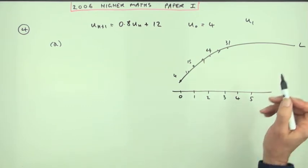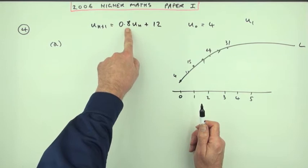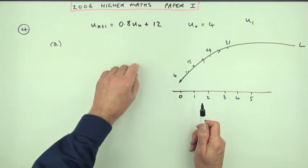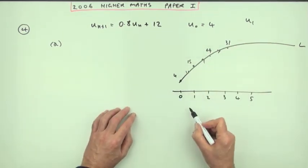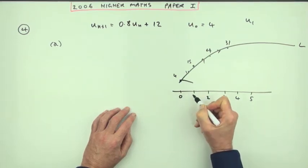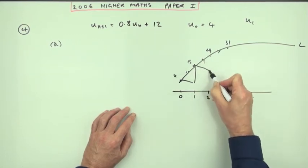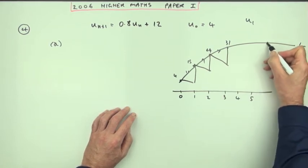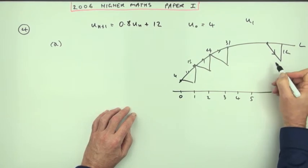It will reach a limit when the difference, which is 0.2 of the preceding number, is the same as that 12, because if you multiply by 0.8 that's the same as subtracting 0.2 of the number. These are all zigzags. You start at 4, you drop it down by 0.2 and then you add 12. You'll reach a limit when you drop it down, the amount you drop it down by is the same as 12.